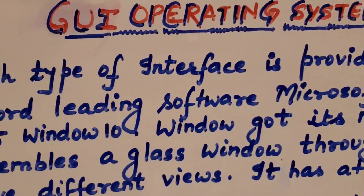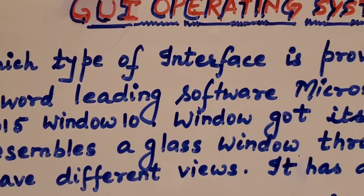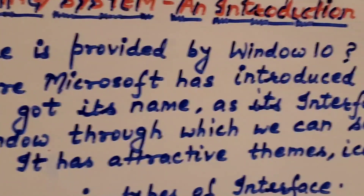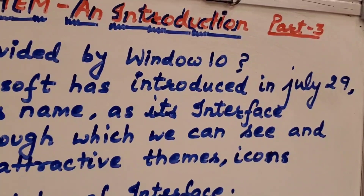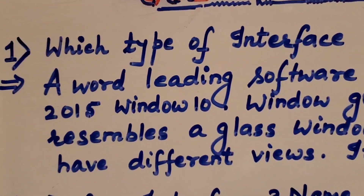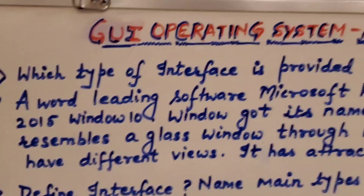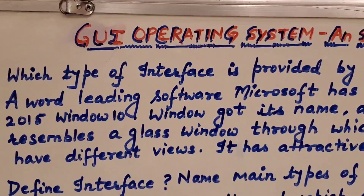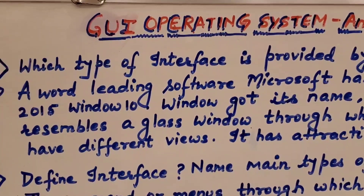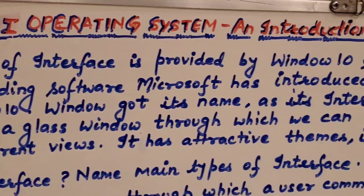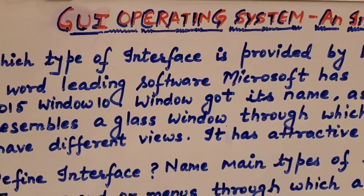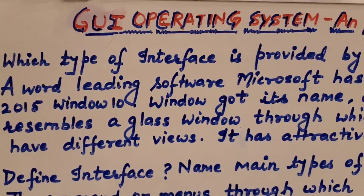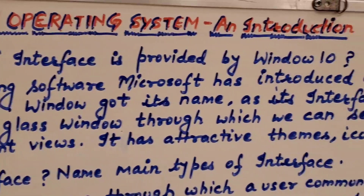As you know, Windows 10 is a very latest software. A world-leading software company, Microsoft, introduced Windows 10 on July 29th of the year 2015. It was made by the most leading software company, Microsoft, from USA. Windows got its name because its interface resembles a glass window through which we can see and have different views. It has attractive themes and icons.